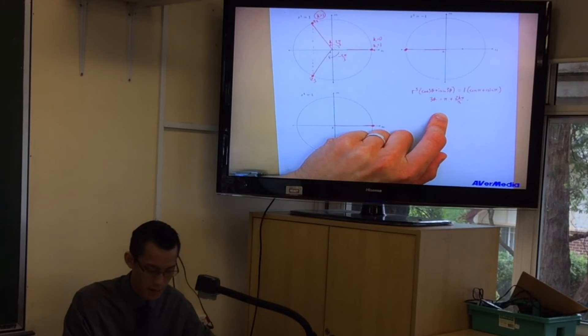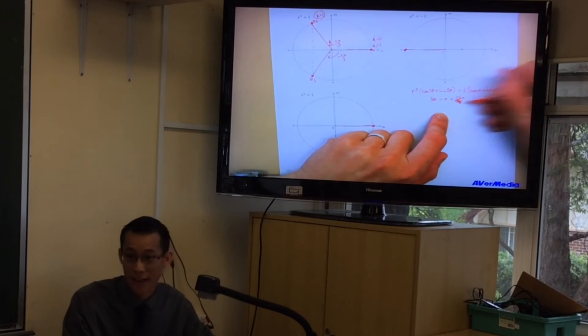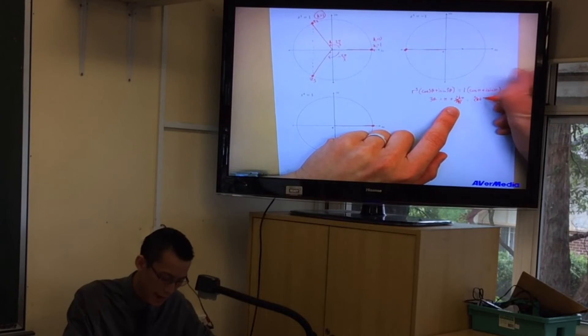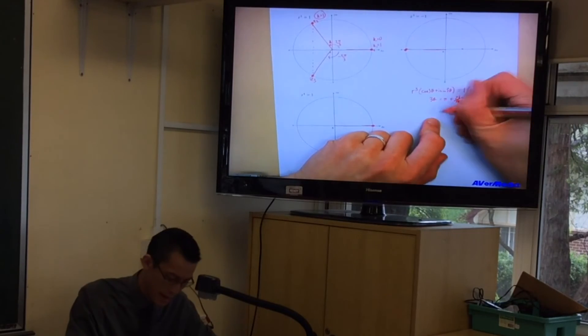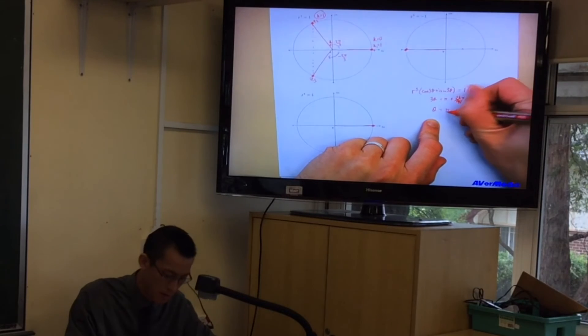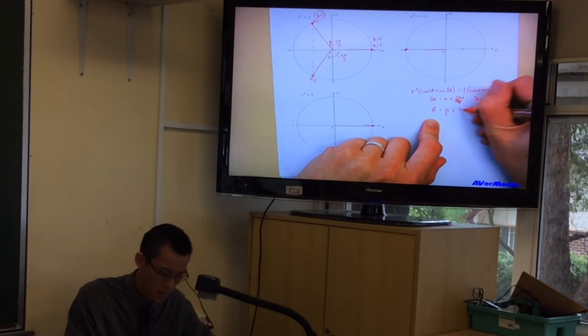Wait, so you said 2kπ. Sorry, I've already divided by, I've already done the next step. 2kπ for integer values of k. And now I'll divide by 3, which gives me? θ equals π/3 plus 2kπ/3.